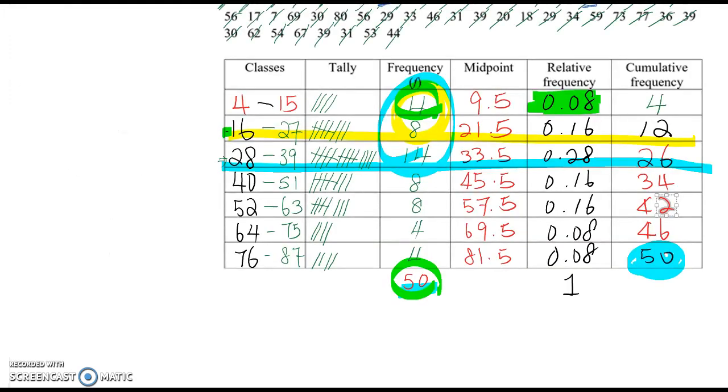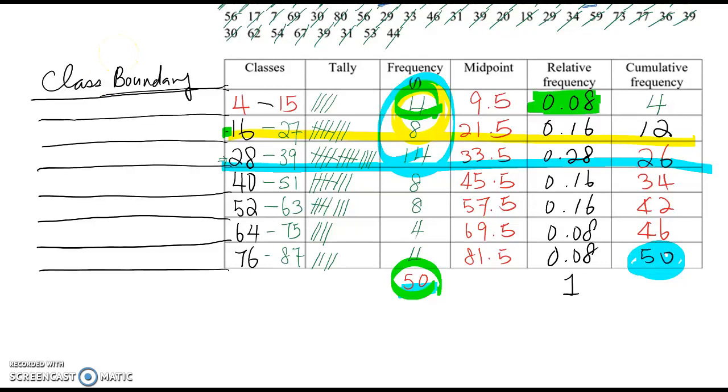You remember this table from the previous video. In order to construct the histogram, you need to find the class boundaries. The class boundary actually generates each class bar touching each other. So, class boundary, we want to adjust each class range value and make sure those two classes have common value.